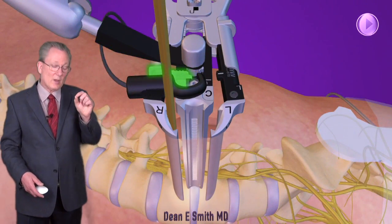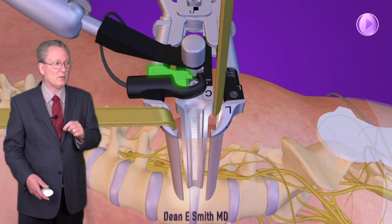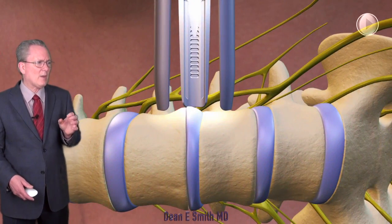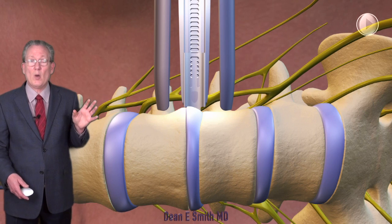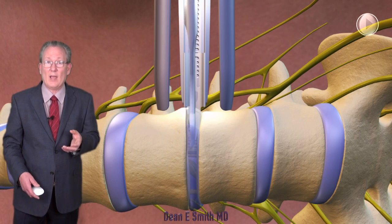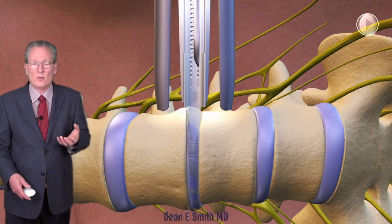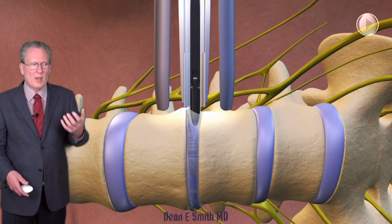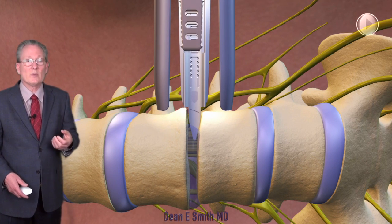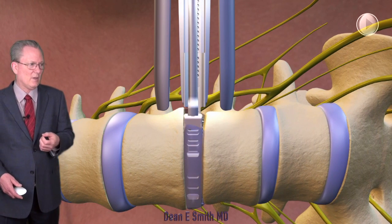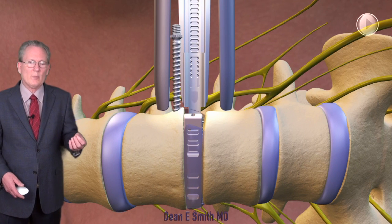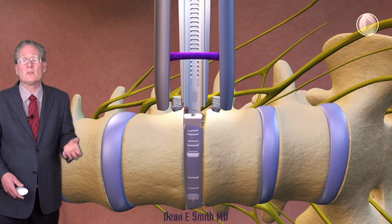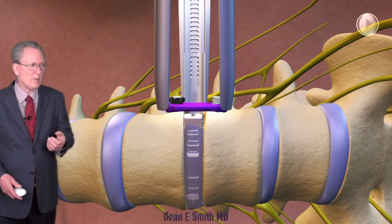Once we're certain that the tube is in the appropriate location, we have the ability to expand that tube. We can expand it big enough to take out a piece of disc, take out all the disc, or even expand it big enough to take out the entire bone if the patient has cancer or something like that. If we've removed the entire disc, we can replace it with something like a plastic disc. If needed, we can put in screws, plates, and other devices if the patient needs to be stabilized.